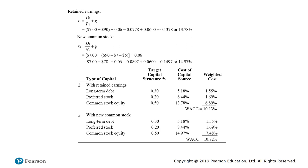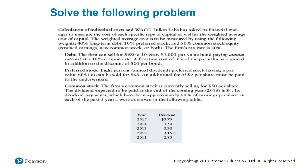We will solve another problem. Dalen Labs has asked its financial manager to measure the cost of each specific type of capital as well as the weighted average cost of capital. The WACC is to be measured using the following weights: 40% long-term debt, 10% preferred stock, and 50% common stock equity. The firm's tax rate is 40%. For debt, the firm can sell for $980 a 10-year, $1,000 par value bond paying 10% coupon interest rate. A flotation cost of 3% of par value is required, in addition to a discount of $20 per bond.